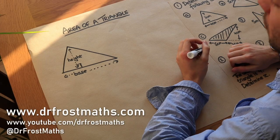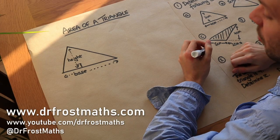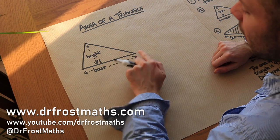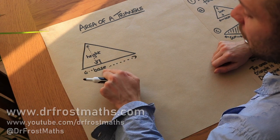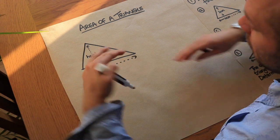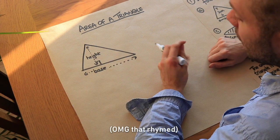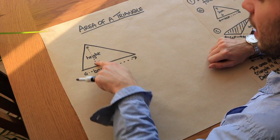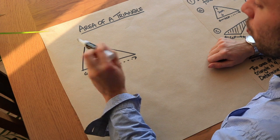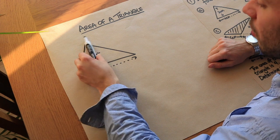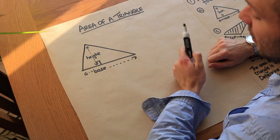Hello and welcome to this video on finding the area of a triangle. We've got a triangle here and this side is what we're going to refer to as the base. The base is often the bottom of the triangle but not necessarily. The height of the triangle is always at right angles to wherever we say the base is.